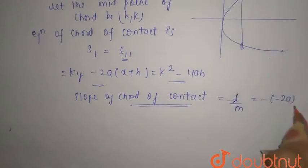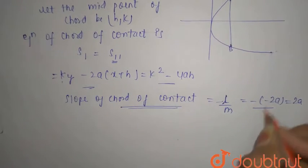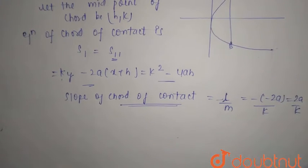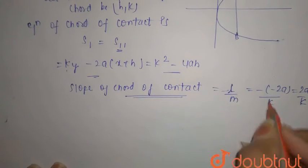So from this, -l/m, here it is 2a, so minus of -2a, that is 2a only, divided by m, which is k here. Similarly, k, so this will be, when you multiply, that is by cross multiplication, you will have lk + 2am = 0.